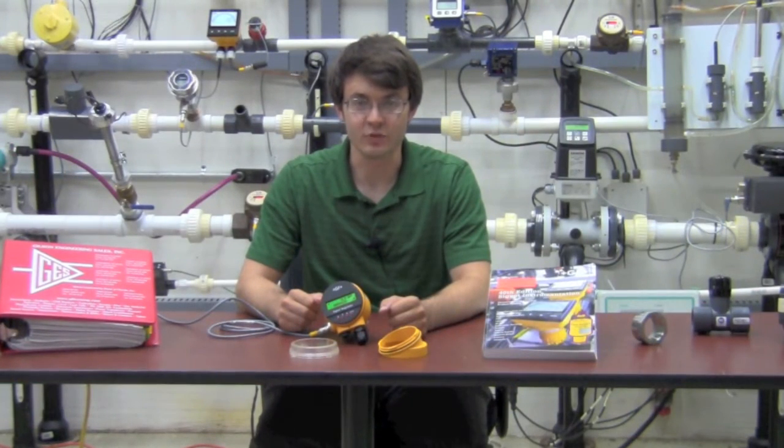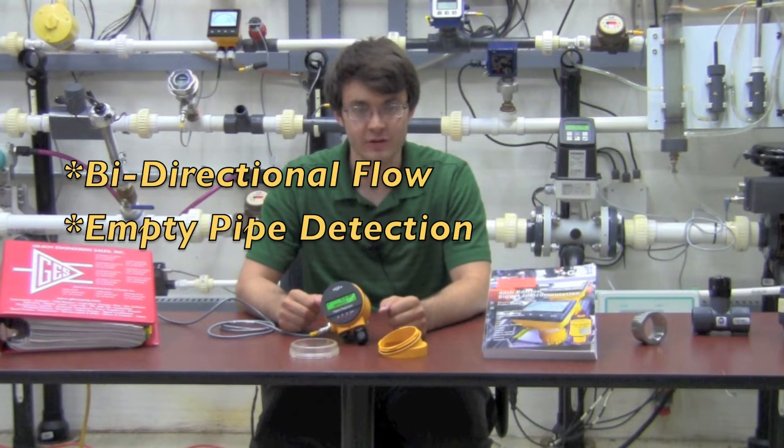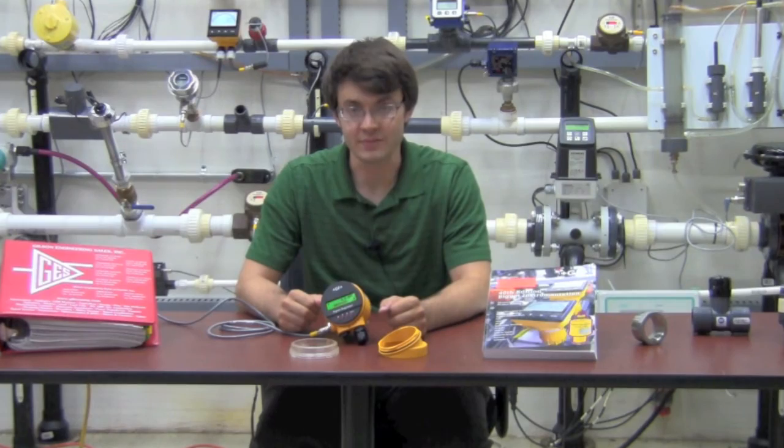Unlike some magnetic flow meters, the Cygnet 2551 offers bi-directional flow capabilities along with empty pipe detection.